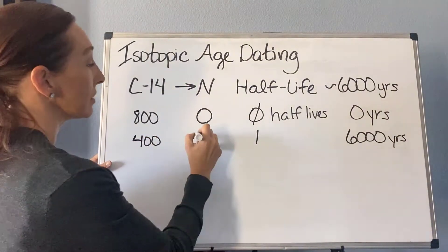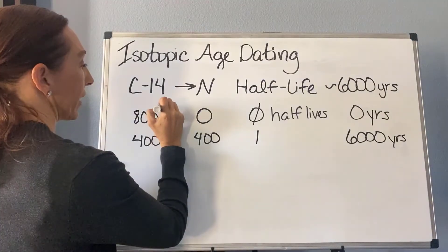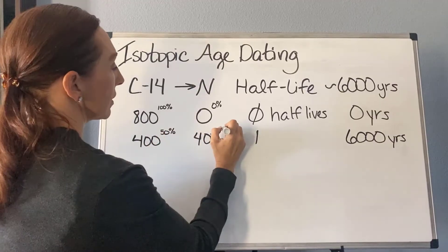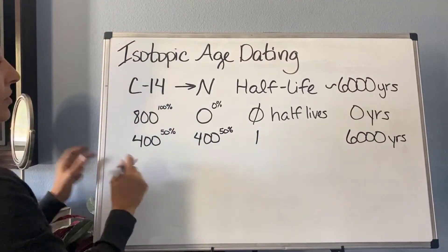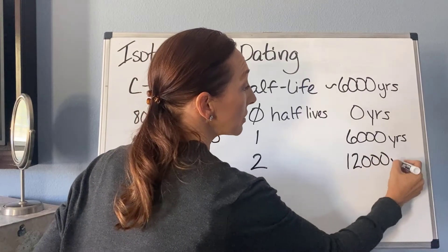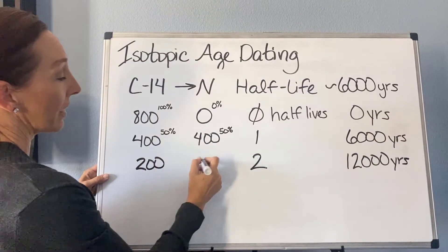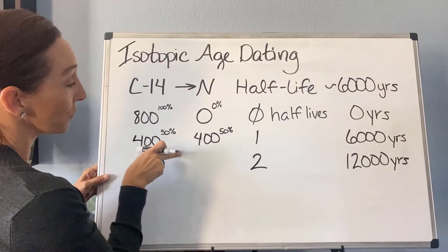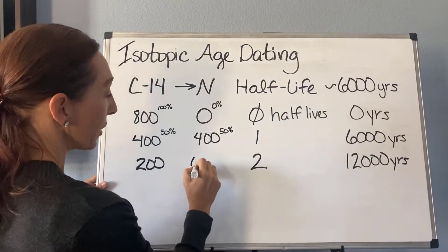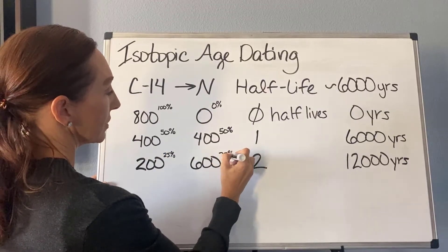after 6,000 years, we would have halved this, so it's a 50-50 split: 400 carbons and 400 nitrogens. We could express that as 100% carbon and 0% nitrogen at the start, then 50% and 50%. After two half-lives — a total of 12,000 years — half of 400 is 200, and those 200 convert and get added to the nitrogen pile, just like M&Ms added to my belly. So I have 200 carbons and 600 nitrogens: a 25% and 75% split.